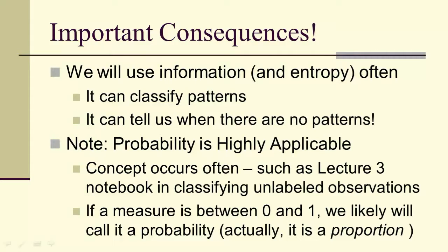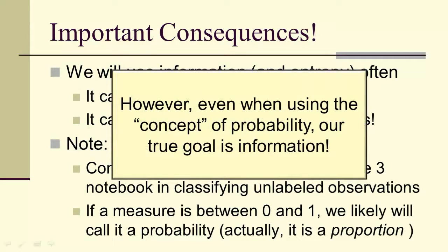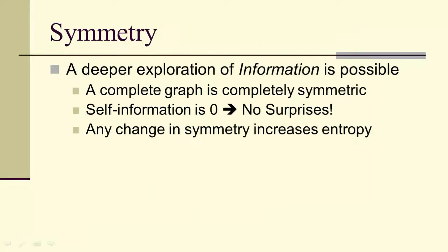So we use information entropy often to classify patterns, can even tell us when there are no patterns. So we'll also be using probability—we've used it already. And in general, if we have a measure that's between 0 and 1, we likely are going to call it a probability. It's actually a proportion.